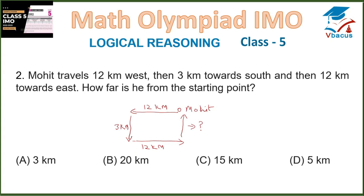Question 2. Mohit travels 12 kilometers west, then 3 kilometers towards south, and 12 kilometers towards east. How far is he from the starting point? Mohit has walked 12 kilometers to the west, 3 kilometers to the south, and 12 kilometers towards the east. What will be the distance?